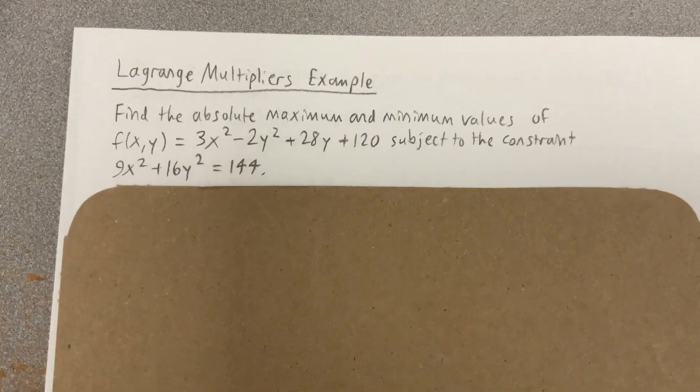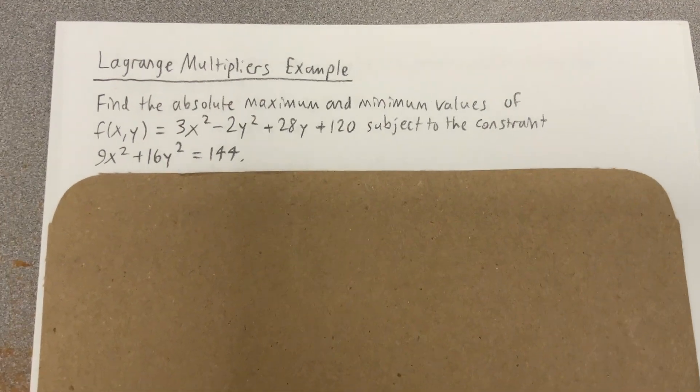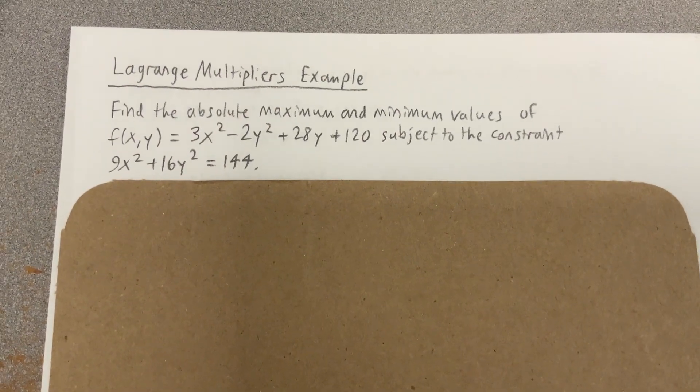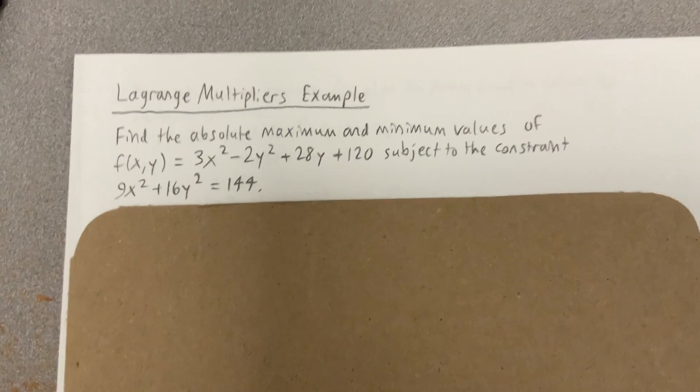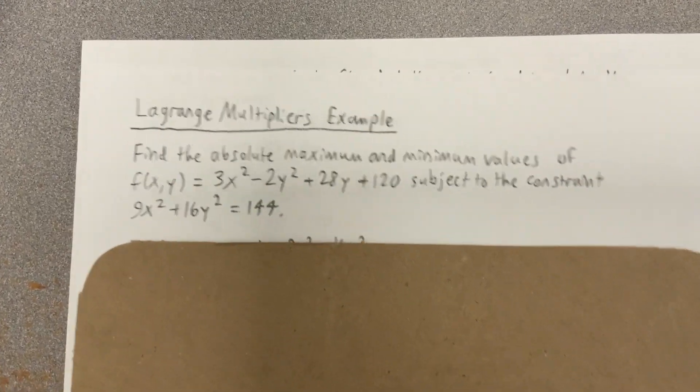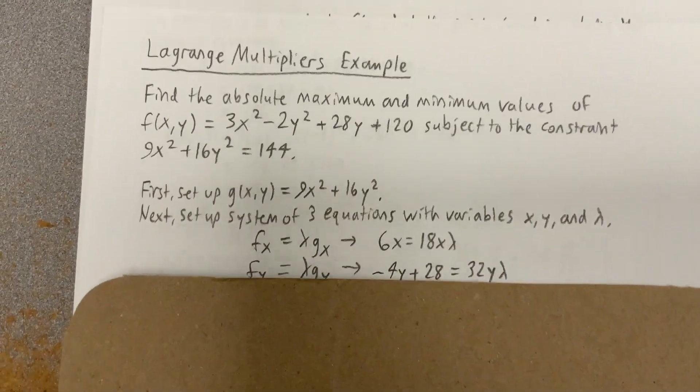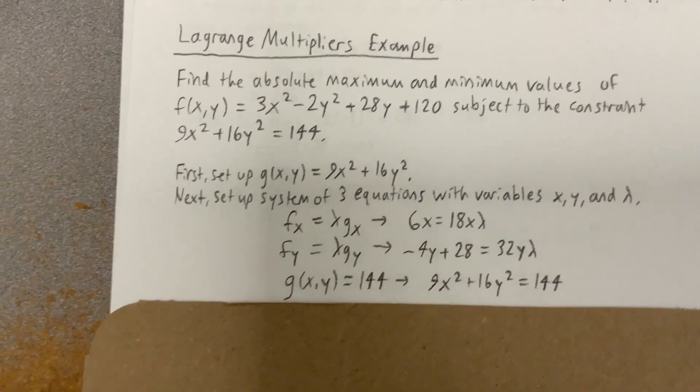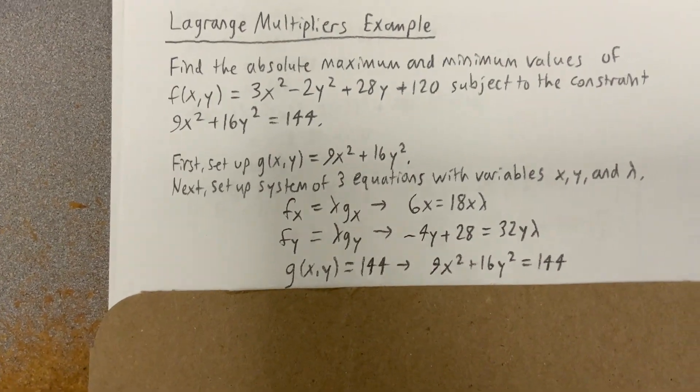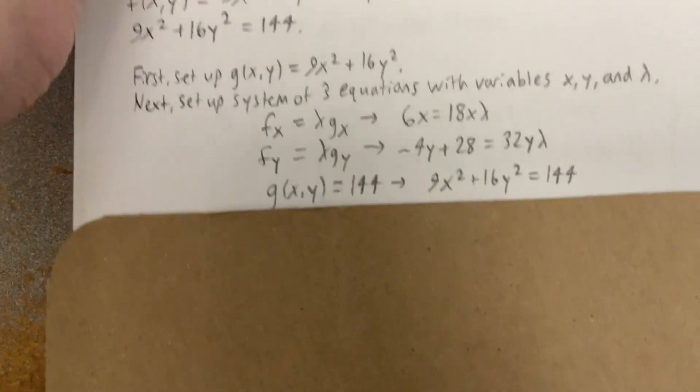This example is completely filled out, so feel free to pause as necessary as I go through these steps. First thing we need to do is set up g(x,y) = 9x² + 16y².